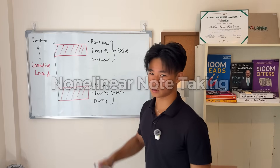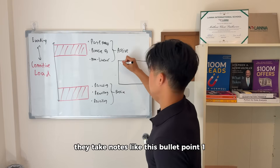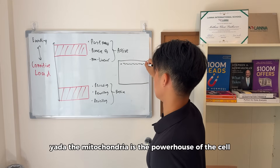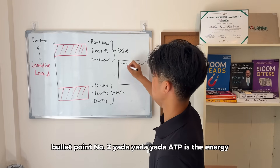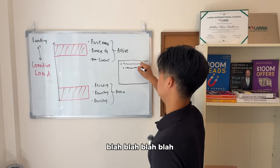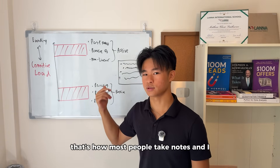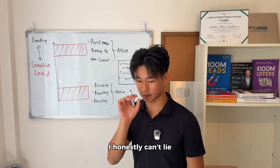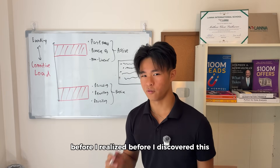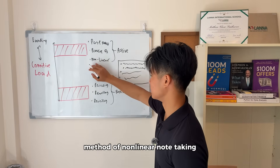So, nonlinear note taking. Most students when they take notes in class take them like this: bullet point one, the mitochondria is the powerhouse of the cell; bullet point two, ATP is the energy source — and so on. That's how most people take notes, and honestly, that was how I used to take notes as well, before I discovered nonlinear note taking.